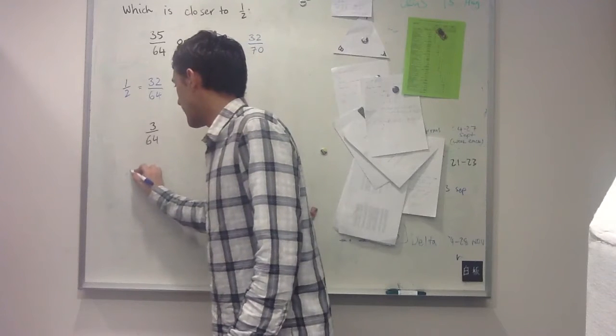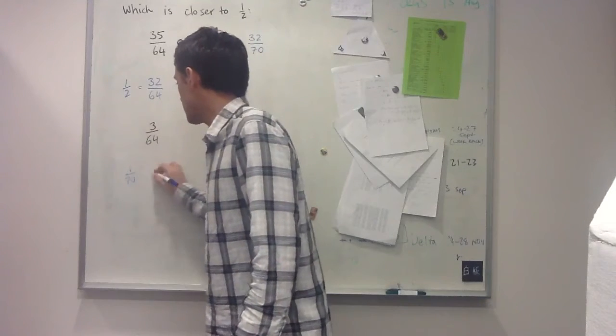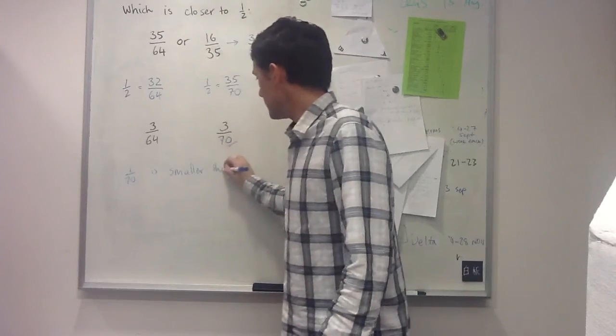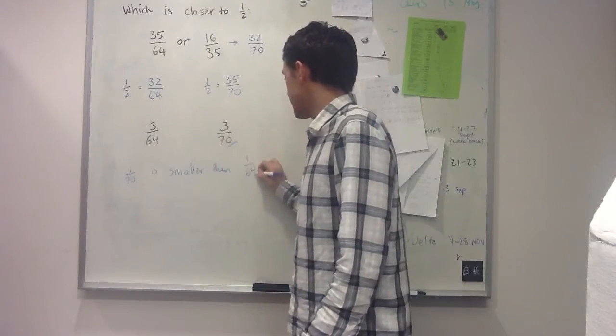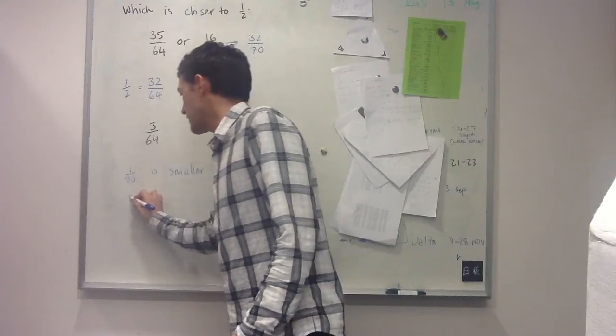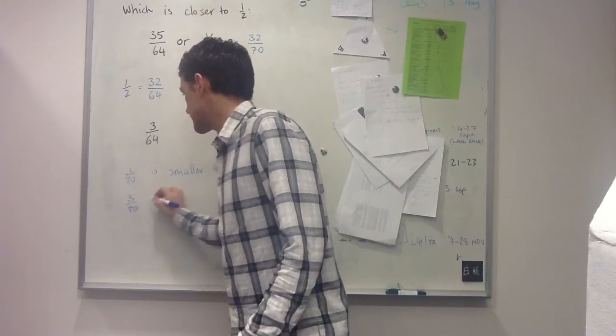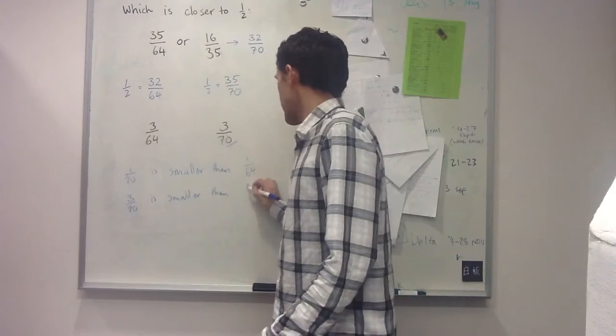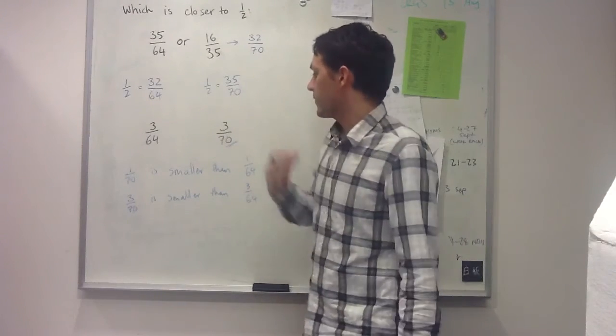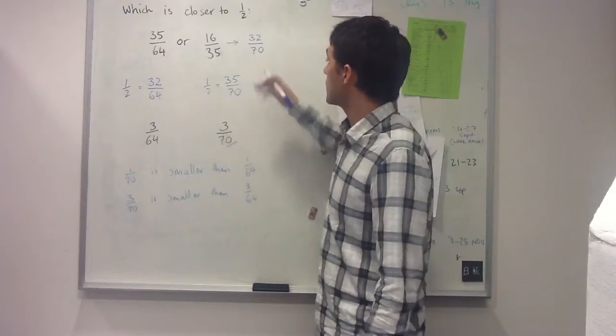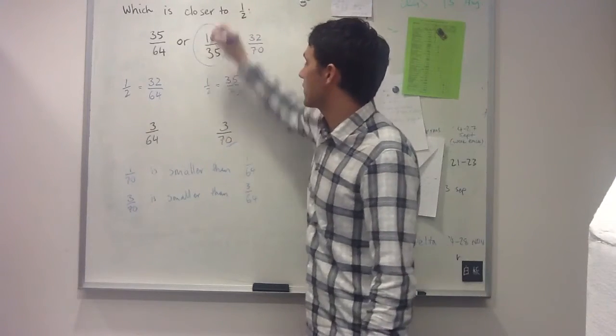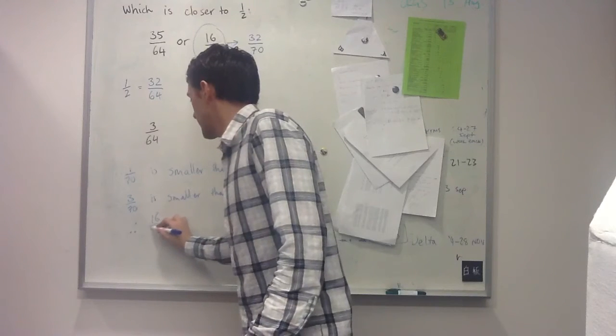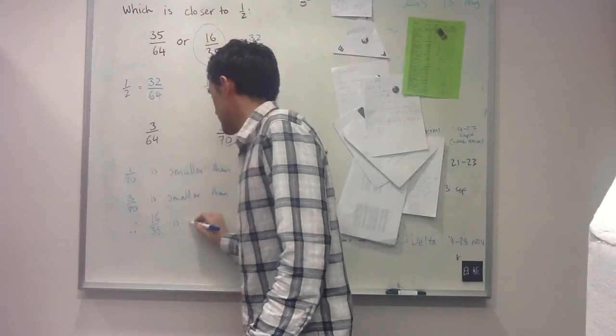First I reason that 1/70 is smaller than 1/64. It follows directly from that that 3/70 is smaller than 3/64. My final step is to say therefore 16/35 is closer to a half.